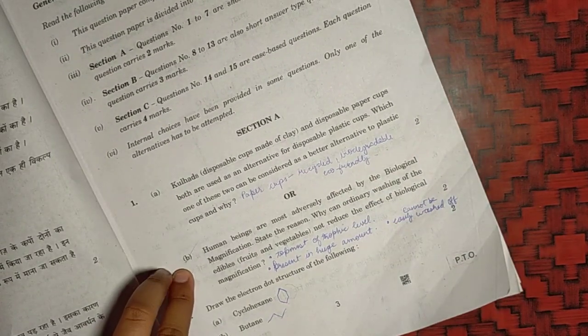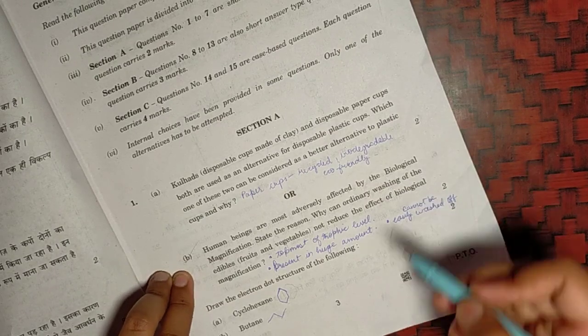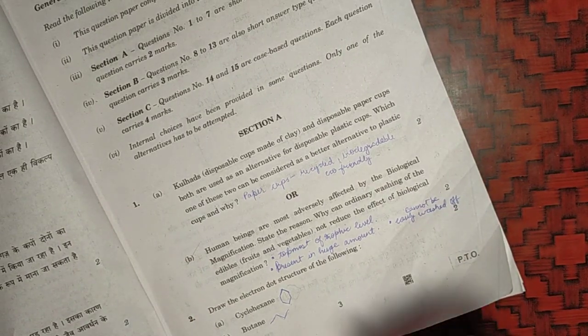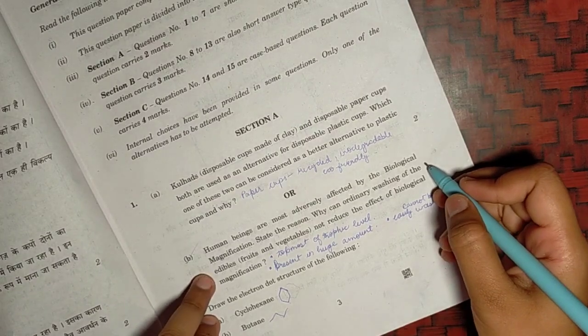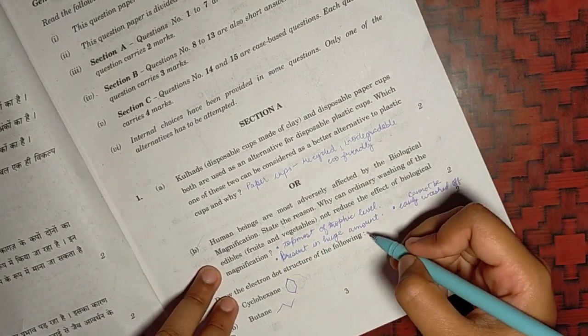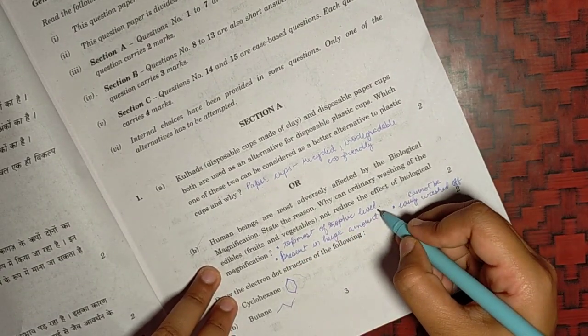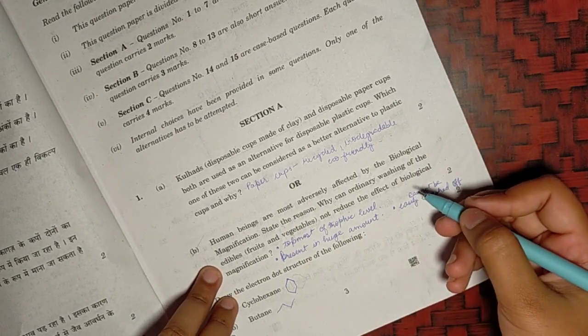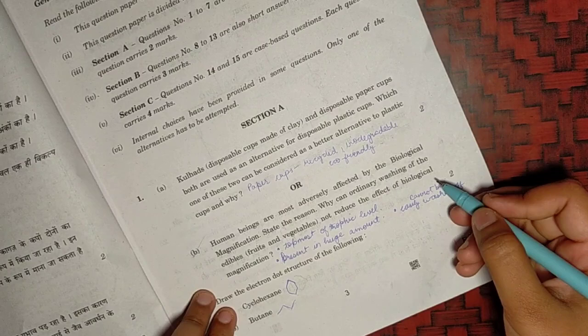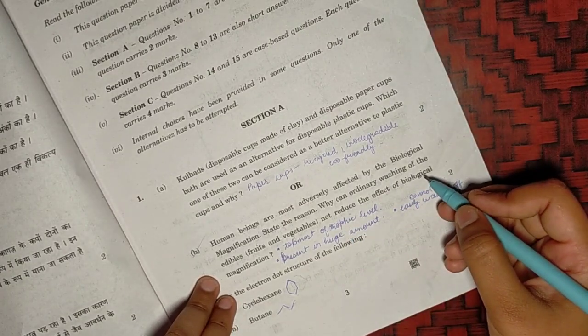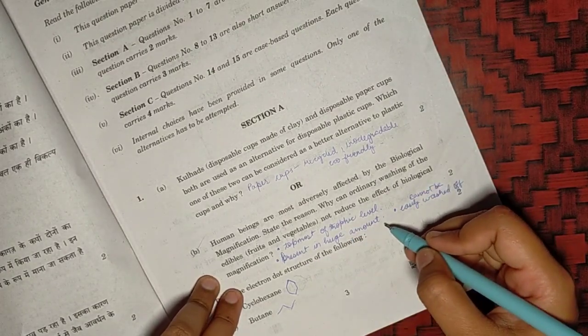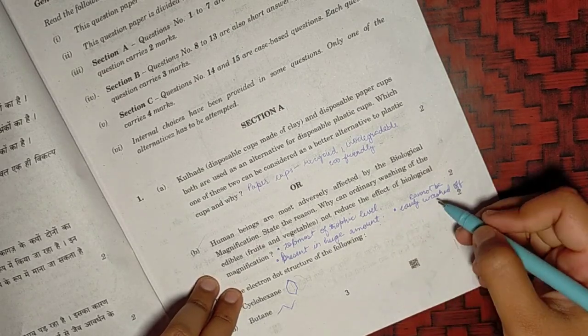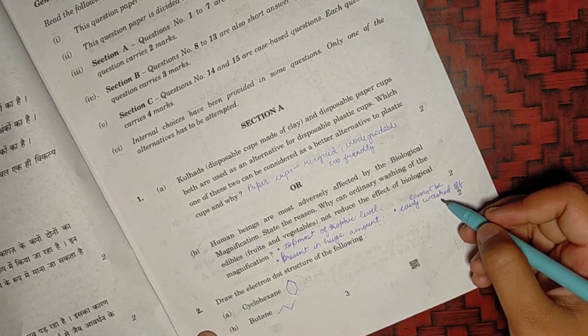Second option, why human beings are most adversely affected by biological magnification. You first need to describe what is biological magnification. Then you need to say that human beings are on the topmost trophic level of the biomagnification. So they will have the maximum concentration of these chemicals in them, thus it affects them the most. The reasons why the ordinary washing cannot help is because they are present in huge amounts in the fruits and vegetables and they cannot be washed off easily with just ordinary water.